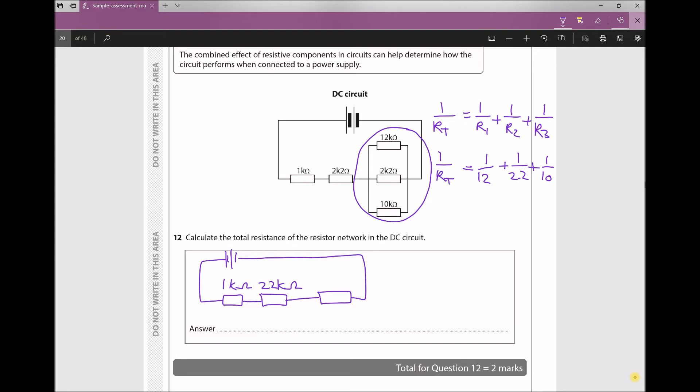Now adding all of that together, I get 1 over RT equals 0.63788.